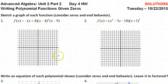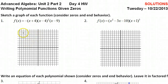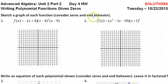Day four. We are talking about polynomials and the connection between the functions and the zeros and the graph. Let's look at problem number one. We're supposed to sketch a graph of the function, keeping in mind the zeros, which will show us the x-intercepts, and also the end behavior.